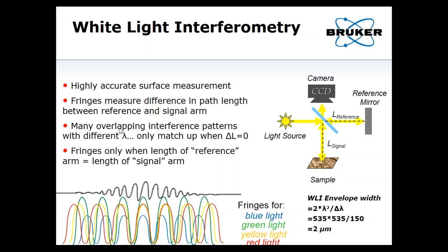With a white light profiler, whereas a laser might have a coherence length of many meters or kilometers, with a white light profiler you have a large bandwidth light source with many wavelengths overlapping. Only at one very unique point in space will all of these wavelengths overlap and combine to give you interference. You have a small envelope determined by the source bandwidth, which is about two microns for us. Only within a two micron path length difference will you actually get interference.